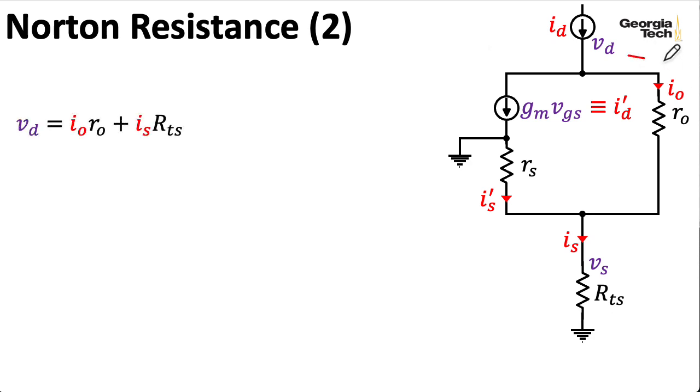So let me write a Kirchhoff's current law equation going down the right branch here. I'll have a voltage drop of Vd across two resistors. One has a voltage drop of I0, R0, and the other resistor has a drop of Is times RTS according to Ohm's law. Now, the source current is the same as the drain current. And then I'm going to rewrite I0 here. I think I'm completely random as to whether I call this I0 or I0. Just roll with it. Anyway, whatever this is, it's flowing out of the branch. So I'm going to write it as ID, which is flowing into the branch minus ID prime, which is flowing out of the branch.